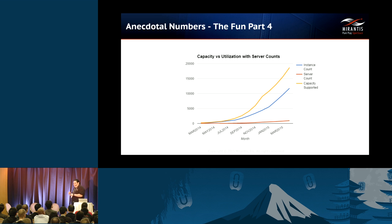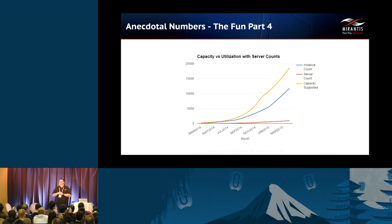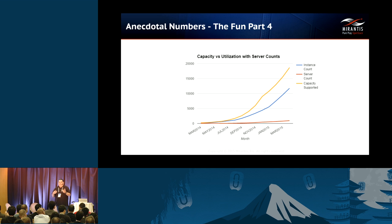Plotting the three against each other: the server counts show a fairly linear growth pattern. The instance count moves up a little more aggressively. The capacity supported also moves in the general same direction, but you can see some differences. Just after January 2015, the instance count takes a more aggressive jump.